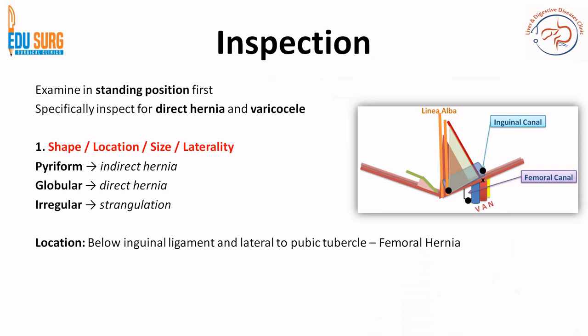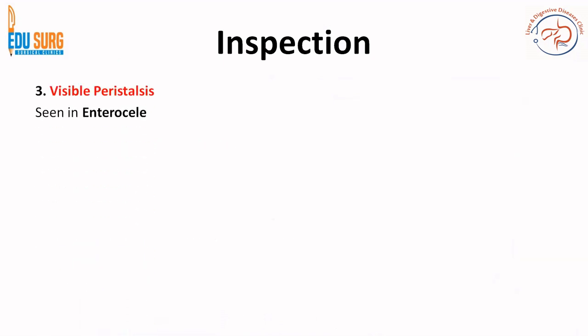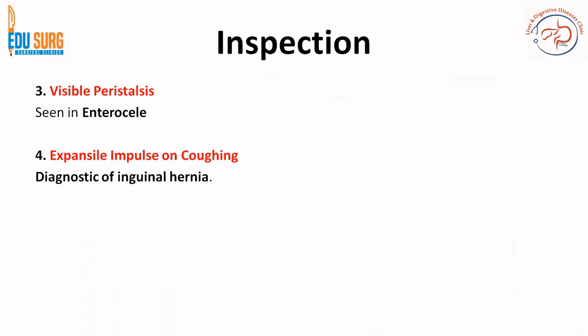Irregular shape can indicate strangulation, and you will also see signs of inflammation in a strangulated hernia. Below the inguinal ligament and lateral to the pubic tubercle is femoral hernia; above the inguinal ligament and medial to the pubic tubercle is inguinal hernia. Also look at the skin for redness, edema, surgical scars such as appendicectomy, and discoloration. The skin over the swelling is usually normal in uncomplicated hernia. Visible peristalsis is seen when intestine is the content — known as enterocele. Expansile impulse on coughing is diagnostic of an uncomplicated or reducible inguinal hernia: ask the patient to cough and if the swelling increases in size, that is a positive expansile cough impulse.